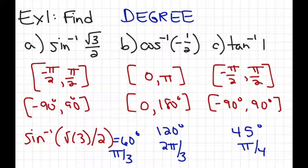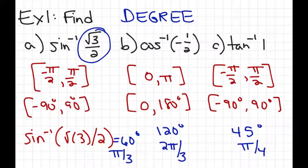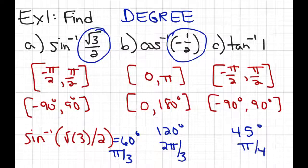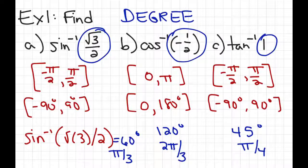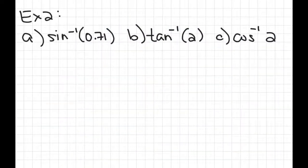These results make sense. The first problem had a positive sine — since the range is restricted to the first and fourth quadrant, and sines are positive only in the first quadrant, you get an angle in the first quadrant. For part B, the inverse cosine of negative 1/2: only cosines in the second quadrant are negative, so it makes sense we got a second-quadrant angle. For the inverse tangent of 1, tangents are only positive in the first quadrant, so we expect a first-quadrant answer.